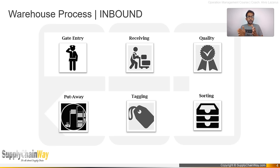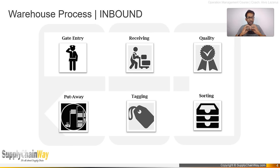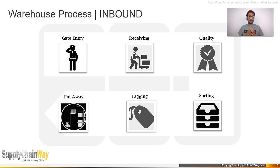The timing of when a product becomes available for sale can vary. Some organizations only mark a product available for sale after it is fully put away and scanned in its location. Others make products available for sale as soon as the quality check and goods receipt inspection is completed — that scan signals the product is available. There are pros and cons to each approach, and systems can be customized accordingly.